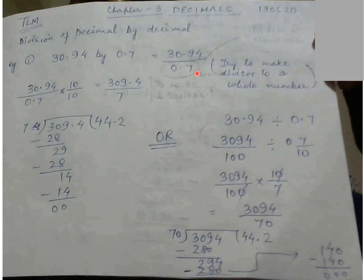Now here what we will do, our work is to make the denominator as a whole number. How to make denominator as a whole number? 0.7, then you will multiply with 10, you will get 7 and 7 is a whole number.